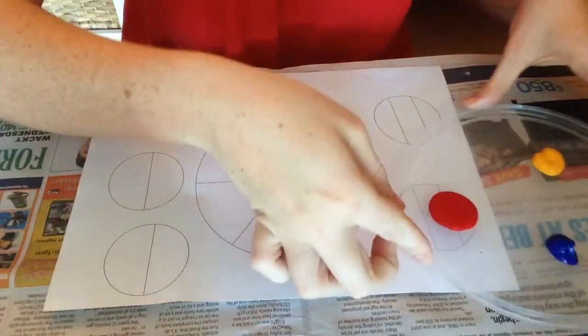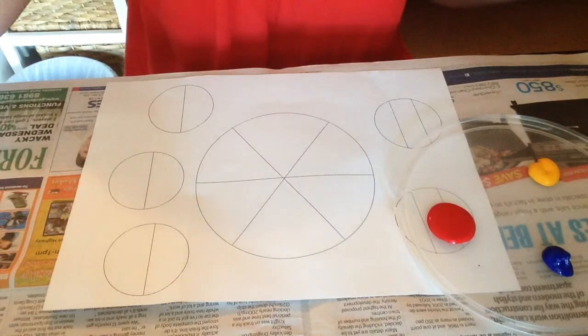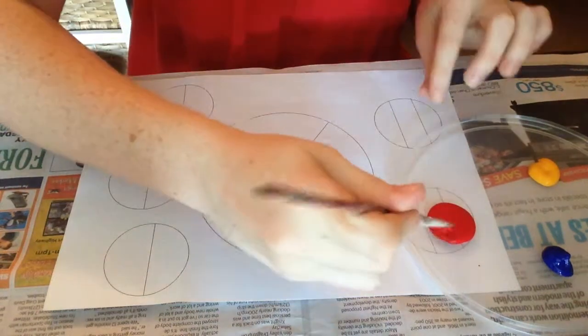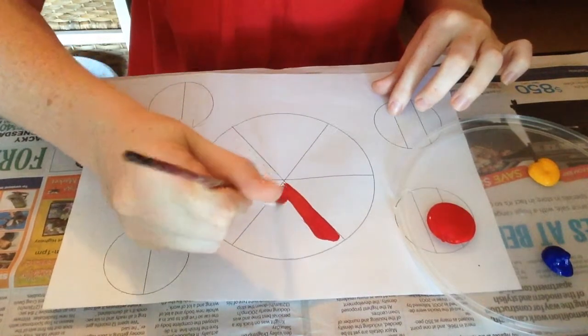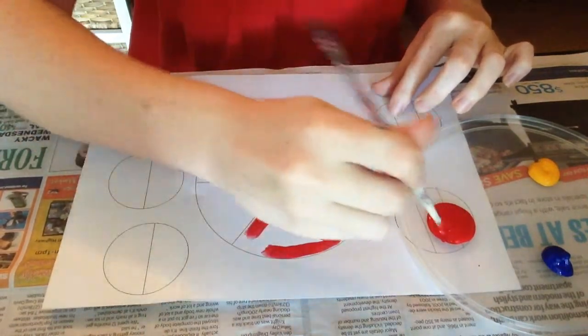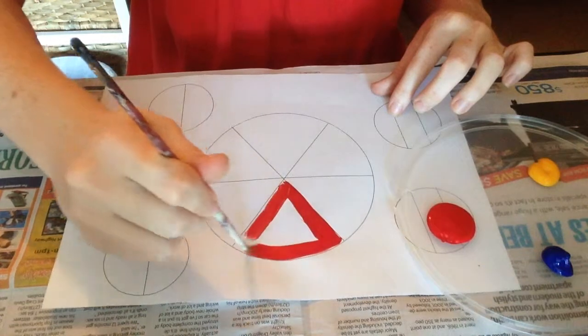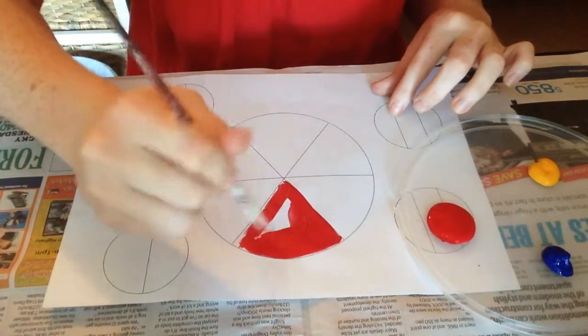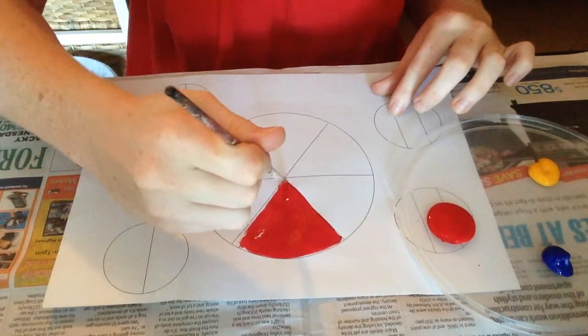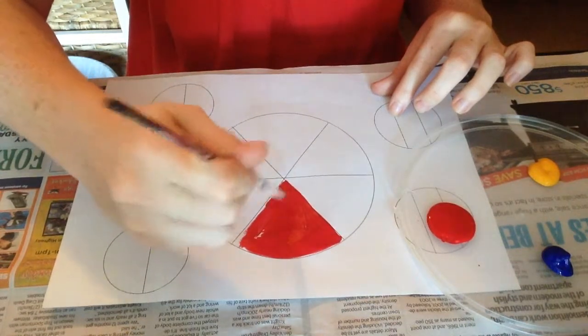So to start with, take our paintbrush and we are putting red in the first triangle. Try and make it as neat as you can but not spending too much time getting it perfect.